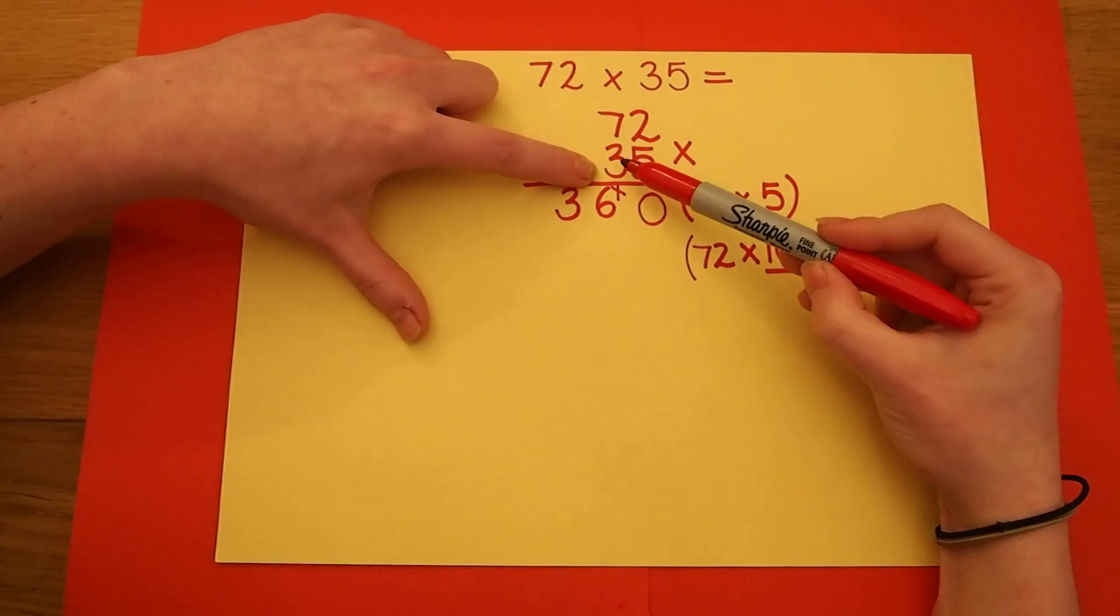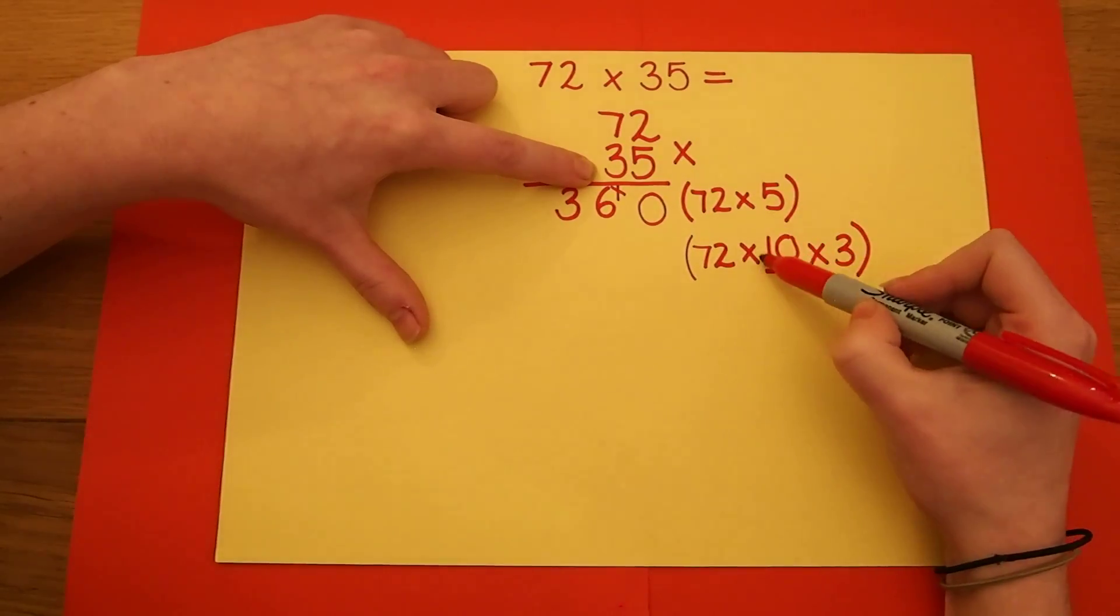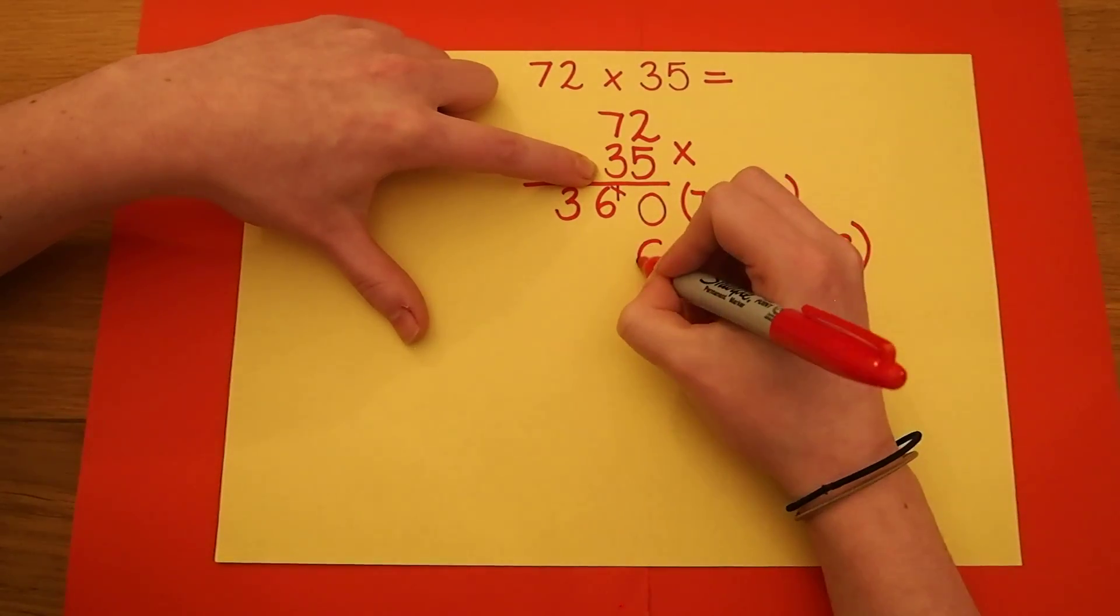Now because I'm making this answer 10 times bigger, I need to put in the magic zero.